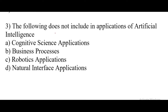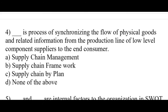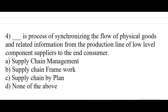Question number 3. The following does not include in application of artificial intelligence. Right answer is Option B: Business Process. Question number 4. Dash is the process of synchronizing the flow of physical goods and related information from the production line of low-level component suppliers to the end consumer. Answer: Option A.